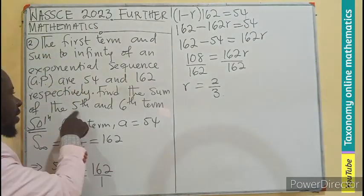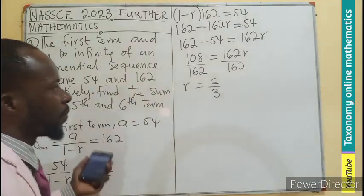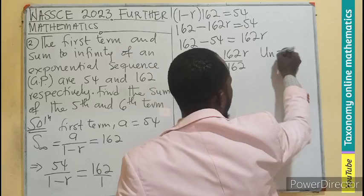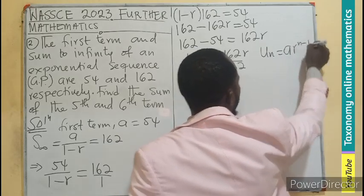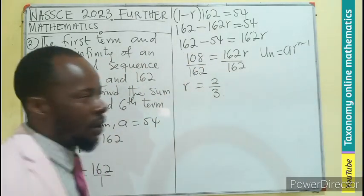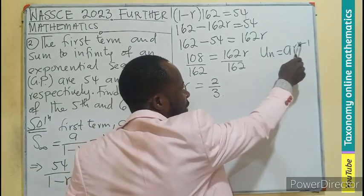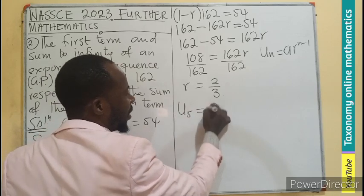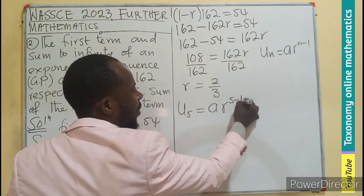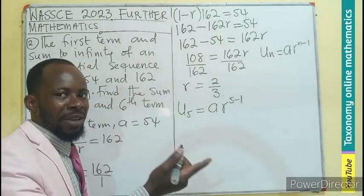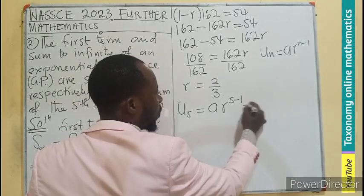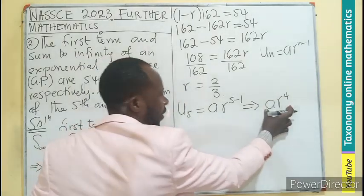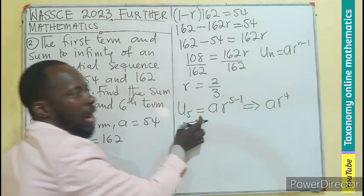Now, the next task is to find U5. In finding the term, let's do a recall. If N is standing for 5, it means 5 will be here. So your U5 is now going to mean AR exponent 5 minus 1 as the exponent. And that will give rise to AR exponent 4. This is the 5th term.